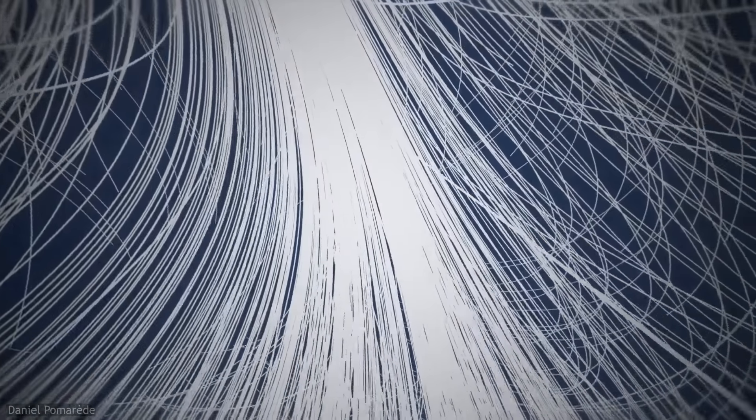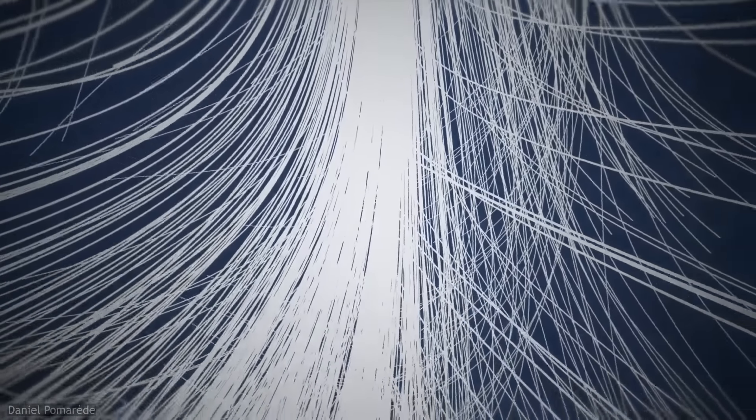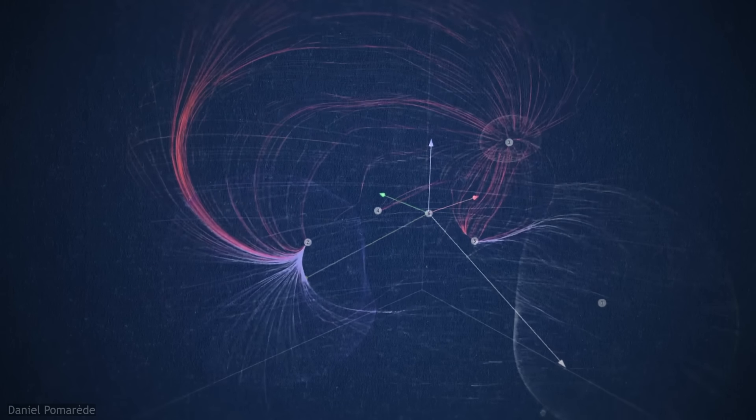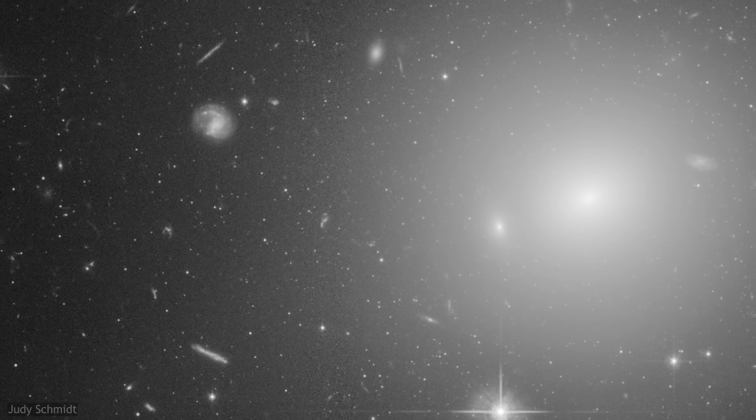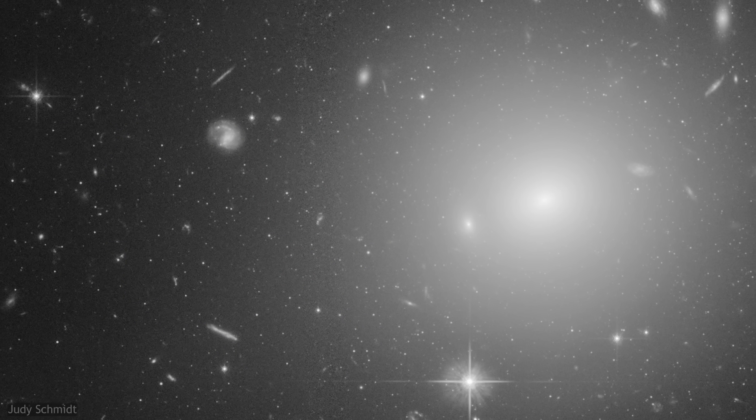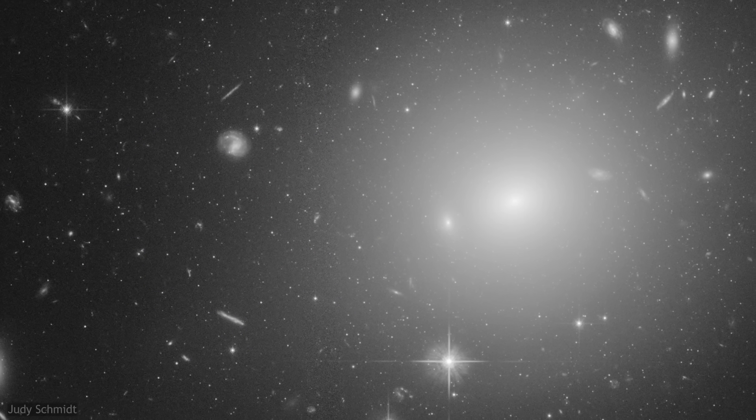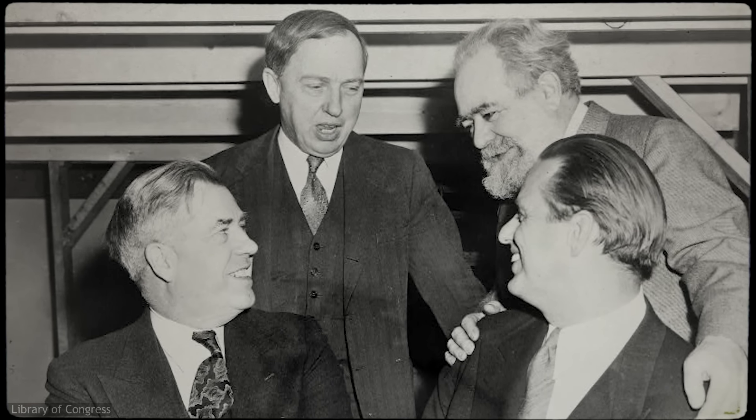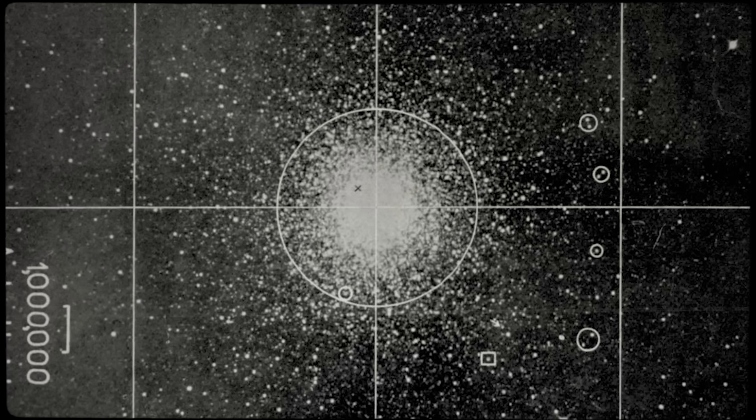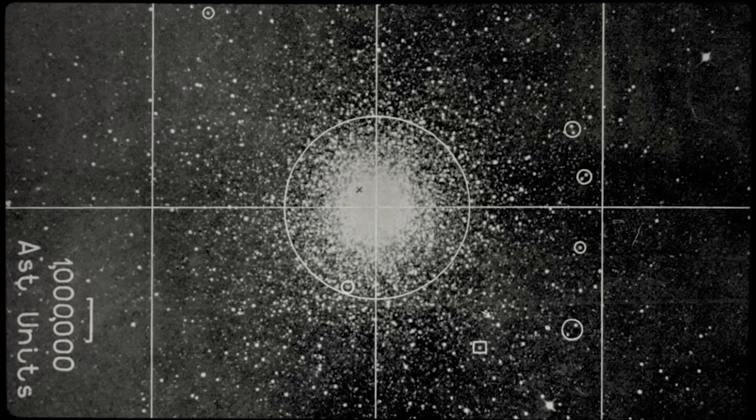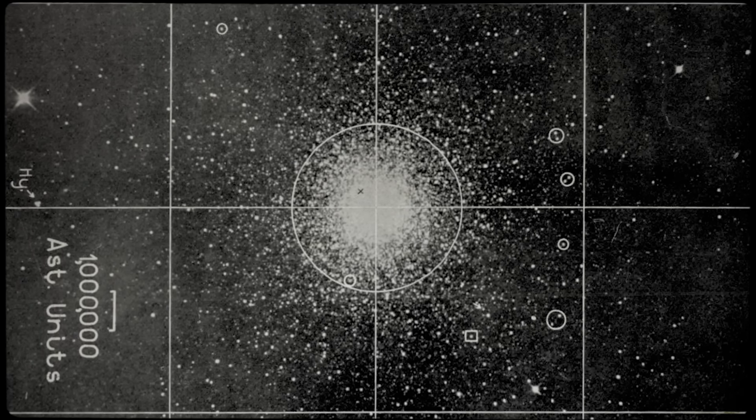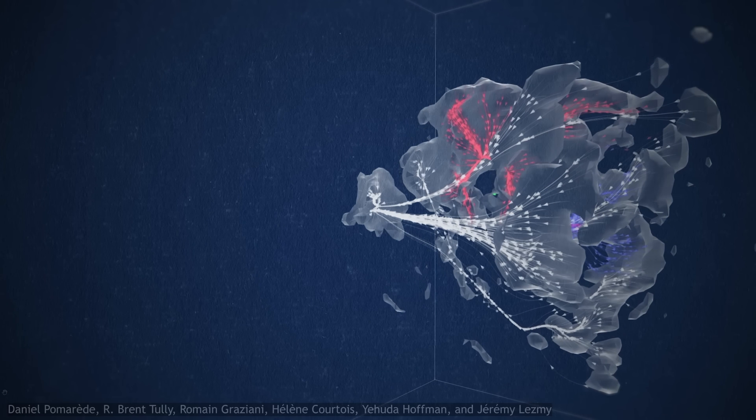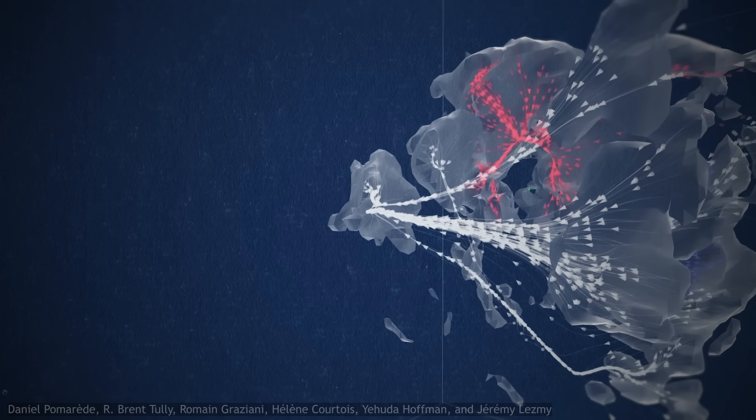There seems to be an additional source of attraction sitting even further beyond the Norma cluster, for Norma too appears to be in motion. An entity even larger, even greater than the Great Attractor, a supercluster, sitting over 650 million lightyears away. The structure was first observed by Harlow Shapley of the Harvard College Observatory in 1930, who could only dimly perceive a distant nebulosity. But we now know it to be another supercluster, the next nearest neighbour to our own Laniakea, and from what we can tell, it's a supercluster even larger than our own.